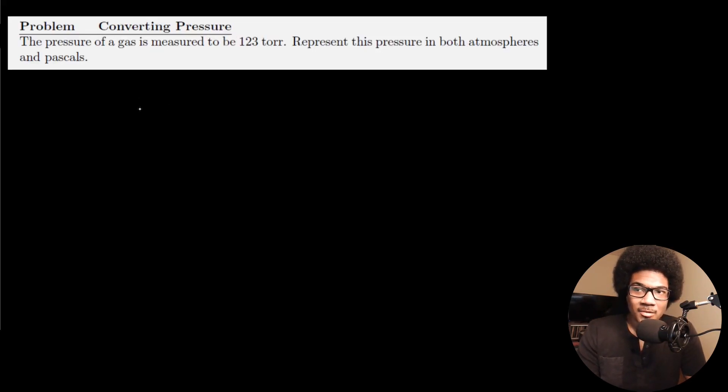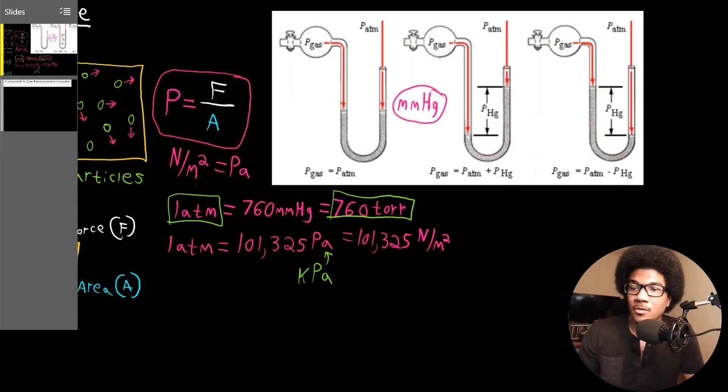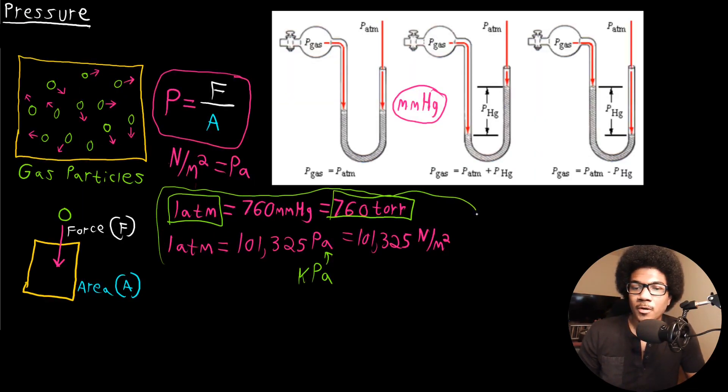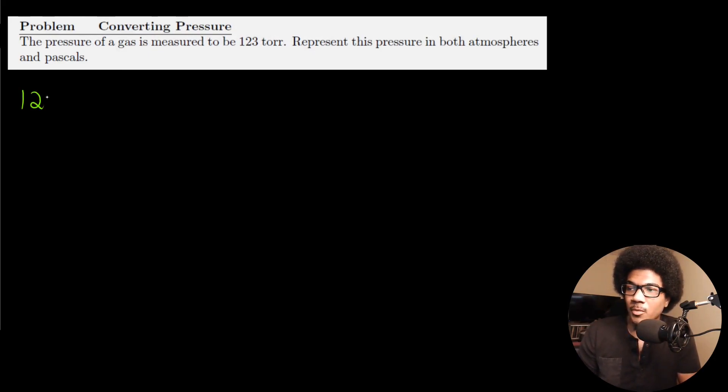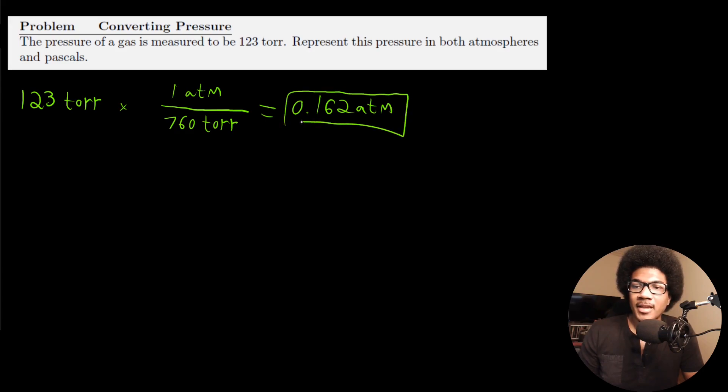So this problem says the pressure of a gas is measured to be 123 Torr, represent this pressure in both atmospheres and pascals. So we have 123 Torr. And we want to represent this in both atmospheres, atm and pascals. So what we're going to have to do is put these conversion factors to work. We know that our pressure was given in Torr and we want to make two conversions here. So let's start with the pressure that we were given. 123 Torr. If we want to convert to atmospheres to atm, then we want to use that conversion factor that in one atm, there's 760 Torr. So for one atmosphere, we have 760. And so when you do the math there, you get 0.162 atm.